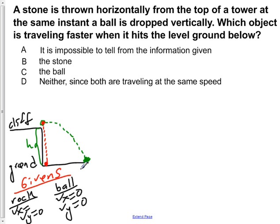They both start off from an initial height y₀ of H and they both reach a final height of y equals zero once they reach the level ground below.